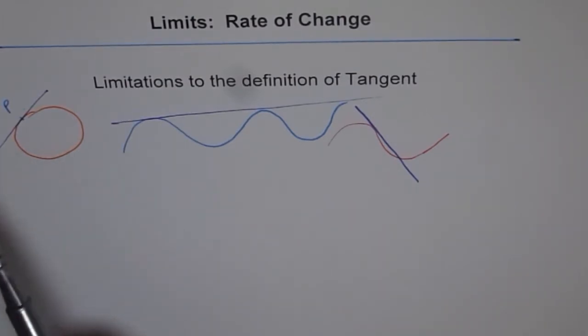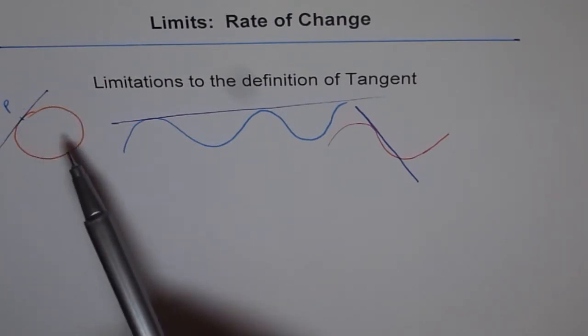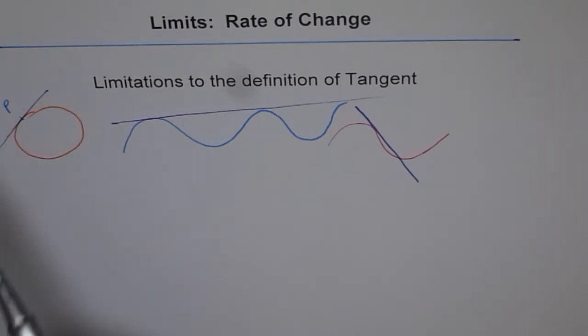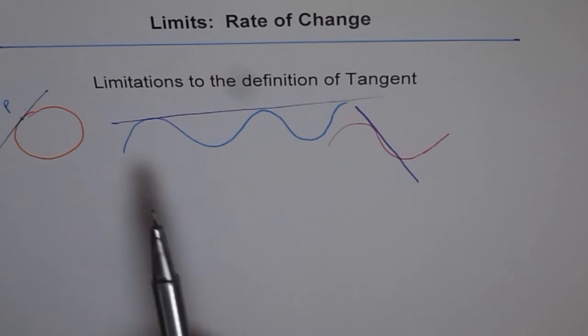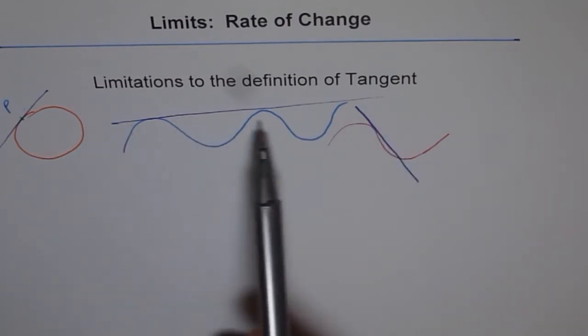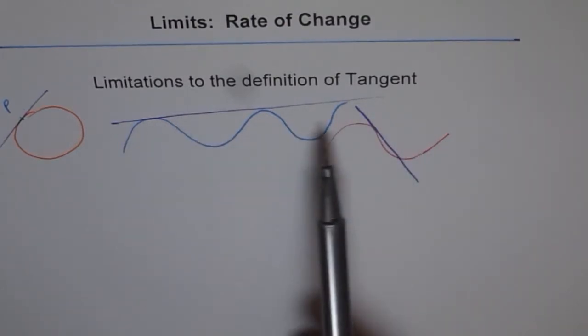Tangent simply can't be said as a line which touches the curve at just one point. It could touch at many points. It could be tangent at many points. It could touch at many points, but be tangent only at one point. And there could be other examples too.